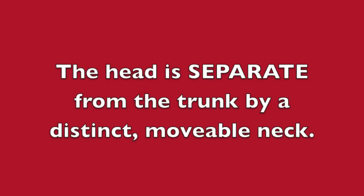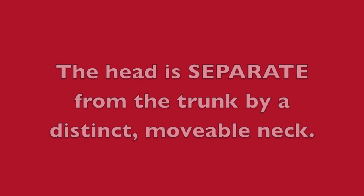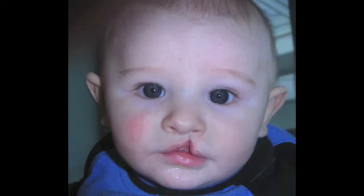The head and neck. The head is separated from the trunk by a distinct movable neck. The mouth contains upper and lower lips, and the upper lip has a cleft, like some humans have. The mouth also contains four incisor teeth — two on the top and two on the bottom.